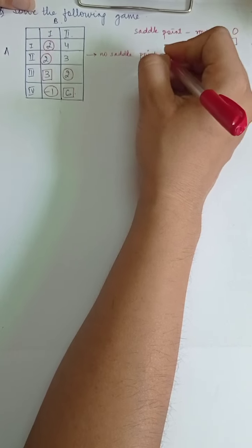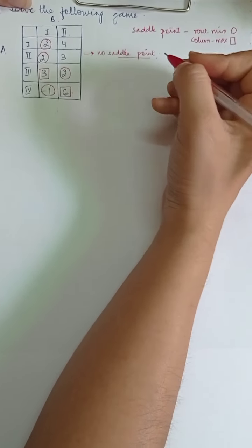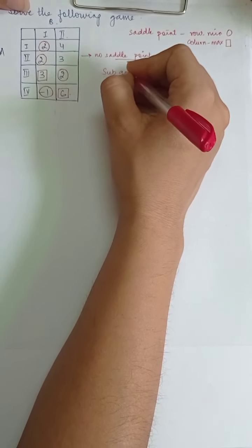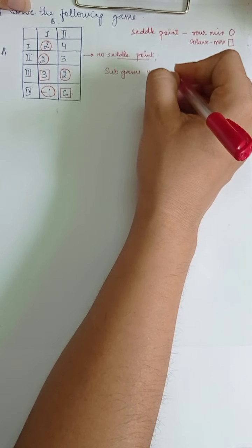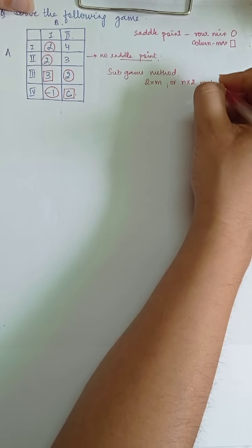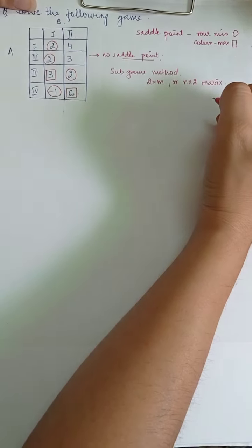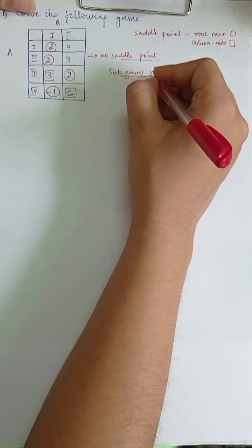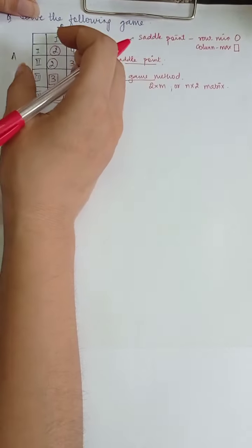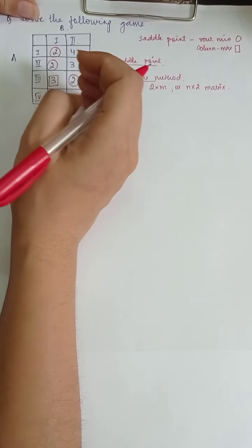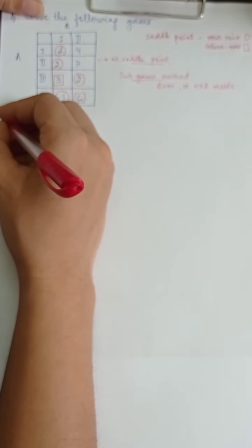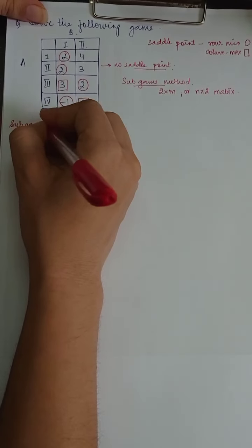Now we will look for different options on how we can solve this game. There are different methods available for game theory. One such method is the subgame method. This method is used whenever there is a 2×M matrix or N×2 matrix — whenever we see that there are two options available with one player. Under the subgame method, we derive different subgames out of one particular game.